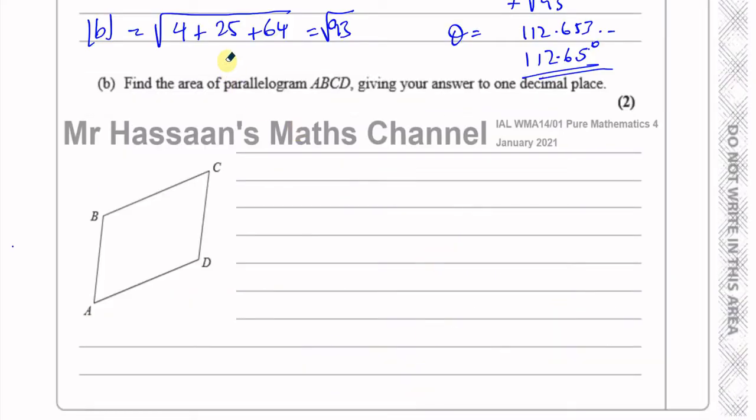Okay, now for part b. In part b, we're asked to find the area of this parallelogram ABCD. Now the area of a parallelogram is given by a formula: AB times the sine of the angle between them. So it's two sides which are adjacent sides, next to each other, and you find the sine of the angle between those two sides and you get your area.